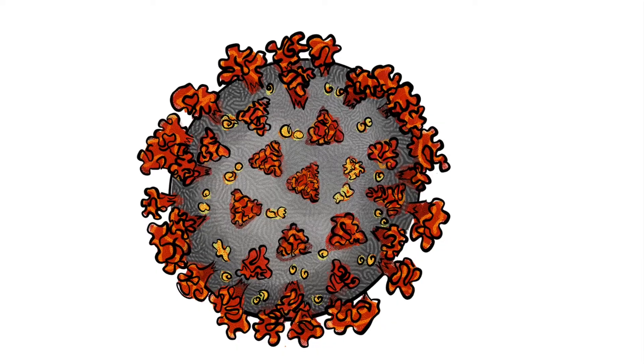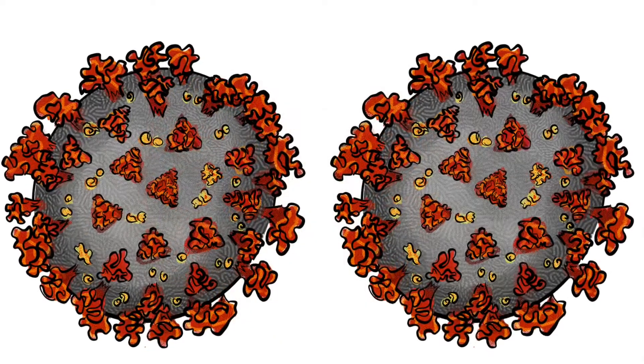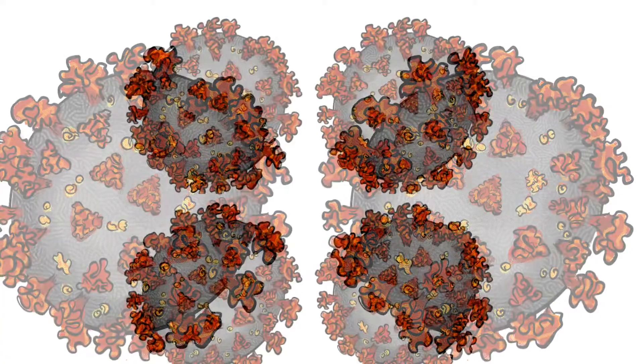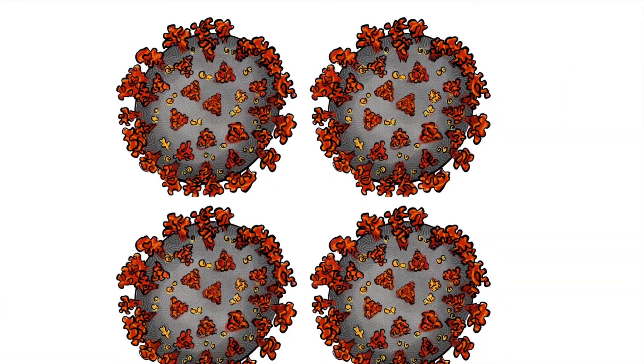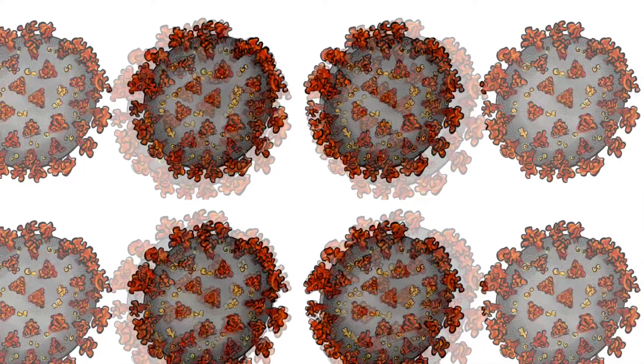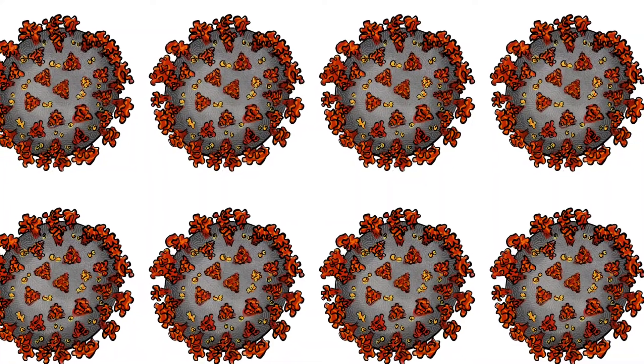But when it is hijacked by the virus, it starts producing virus copies. And this production of virus copies happens at an exponential rate. In no time, cells become overburdened.